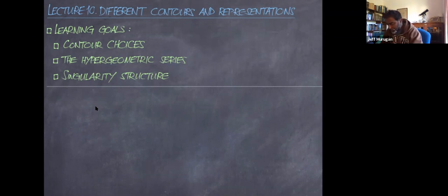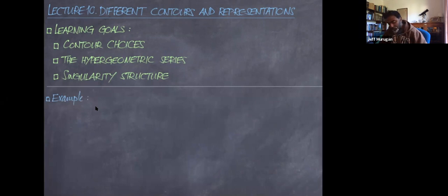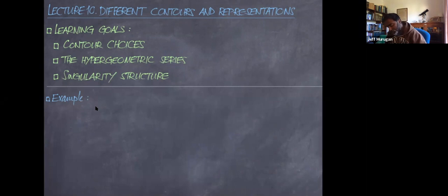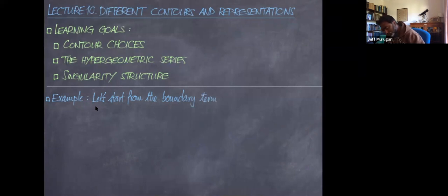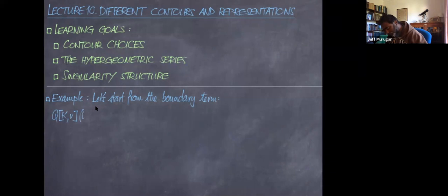Let's start by revisiting the integral representation of the hypergeometric equation. This starts with the boundary term that shows up when we do our integration by parts.